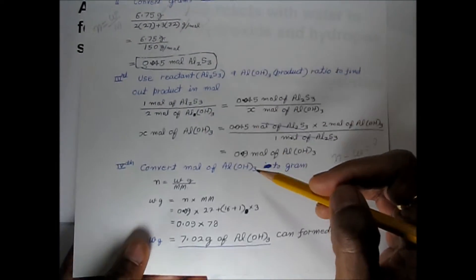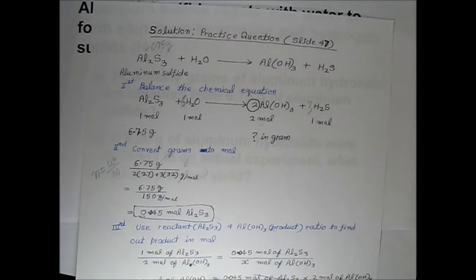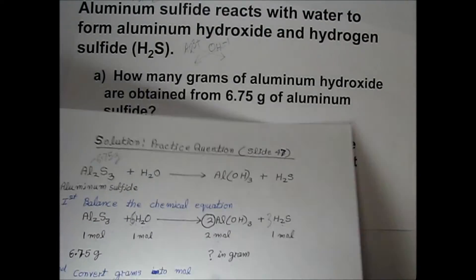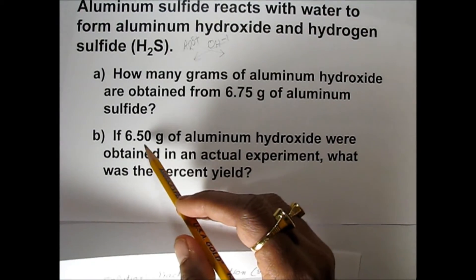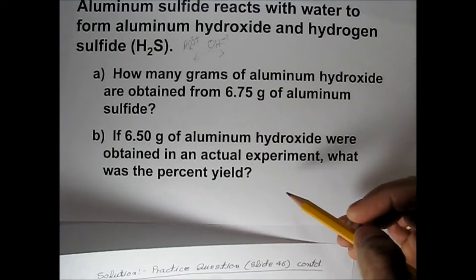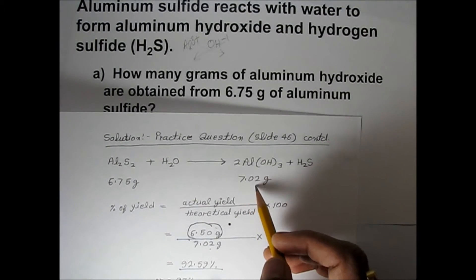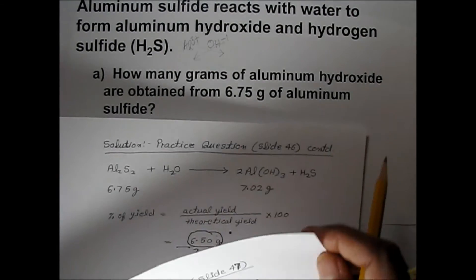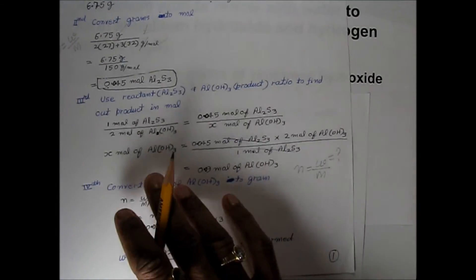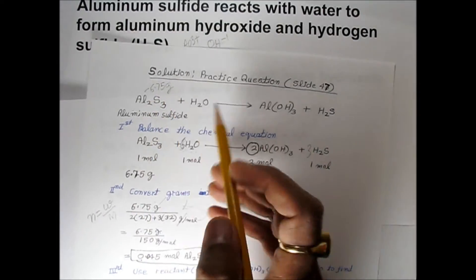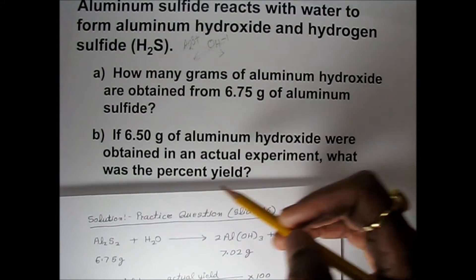This is how we calculate the amount of product formed from a given amount of reactant. The next part of the question: if 6.50 grams of aluminum hydroxide were obtained in an actual experiment, what is the percentage yield? From 6.75 grams of aluminum sulfide, the theoretical yield was 7.02 grams of aluminum hydroxide.